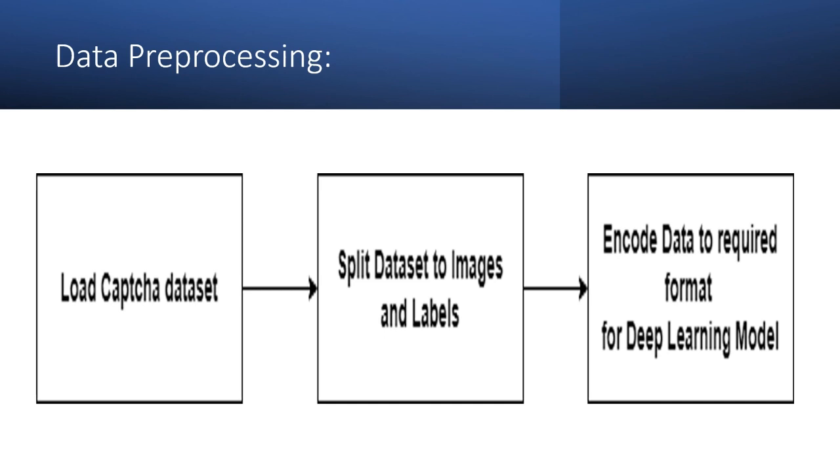After data collection, the next step is to prepare the data for training. This involves a couple of steps. We first split the dataset in the categories of images and labels. Then, we preprocess the CAPTCHA images to make them suitable for the RNN model. This involves converting the images to grayscale, resizing them to a fixed size, and normalizing the pixel values to a range between 0 and 1.